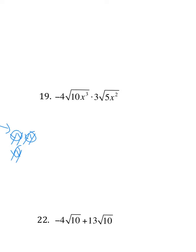Now here we've got something. Again, remember numbers with numbers. This is still a multiplication problem. So negative 4 times 3 is negative 12. Numbers with numbers, radicals with radicals. So the radical is going to be the square root of 50 x to the 5th.